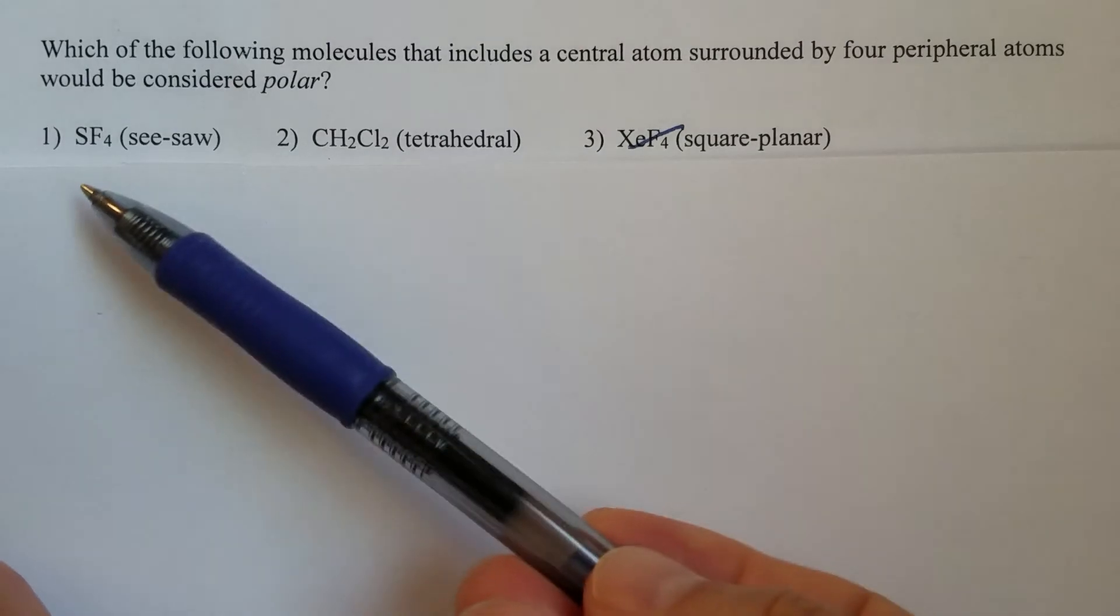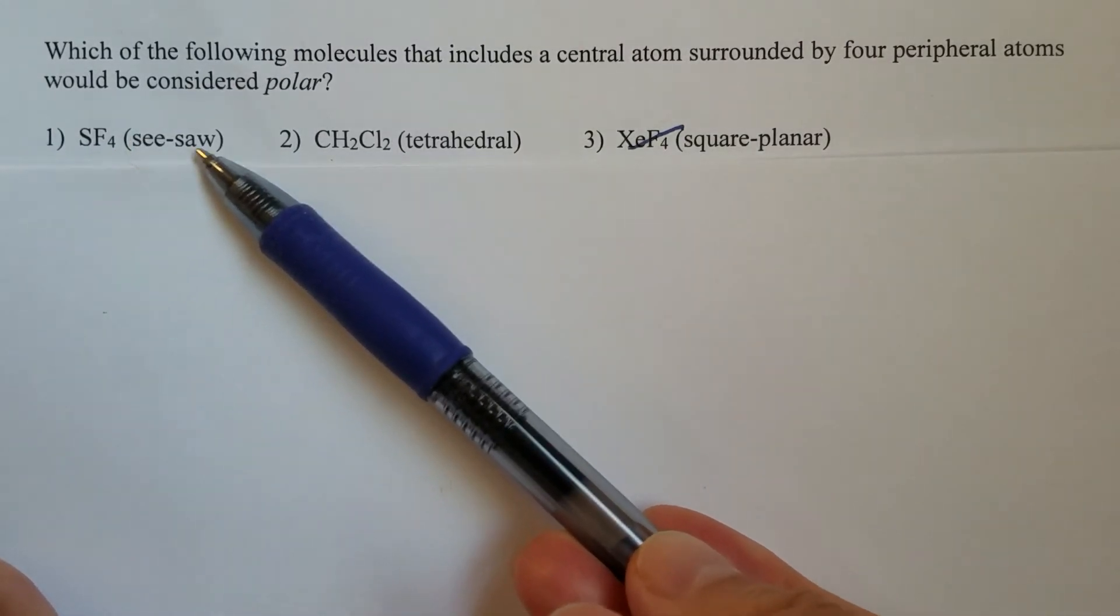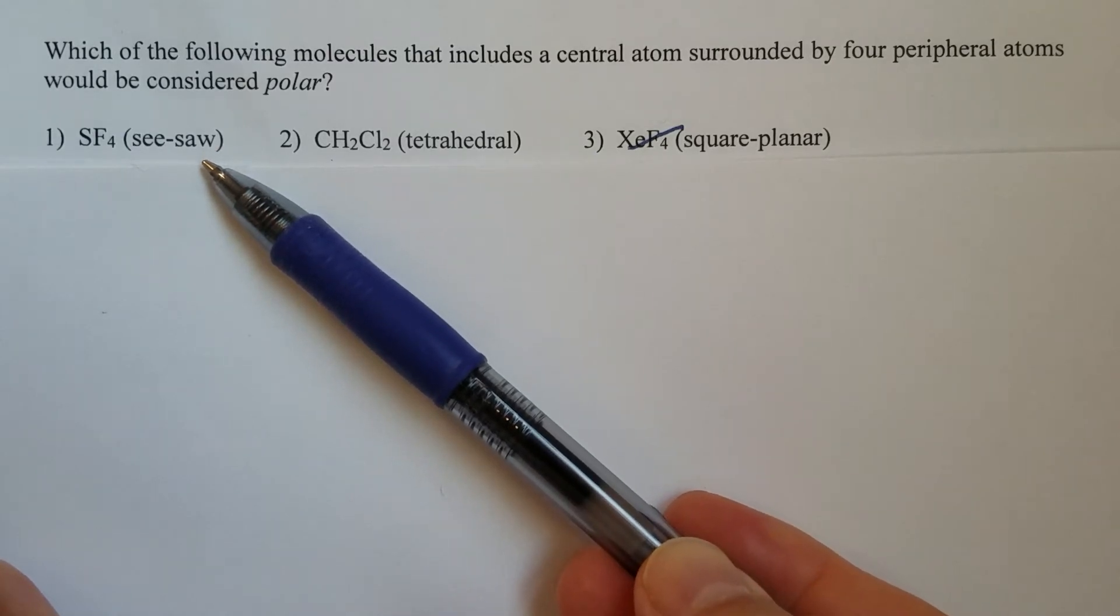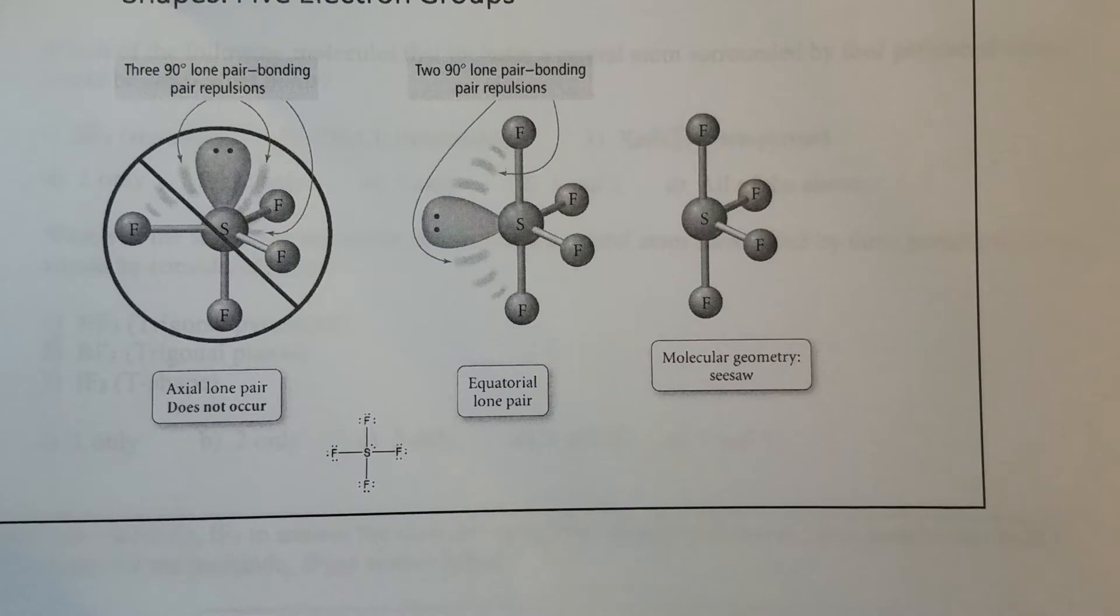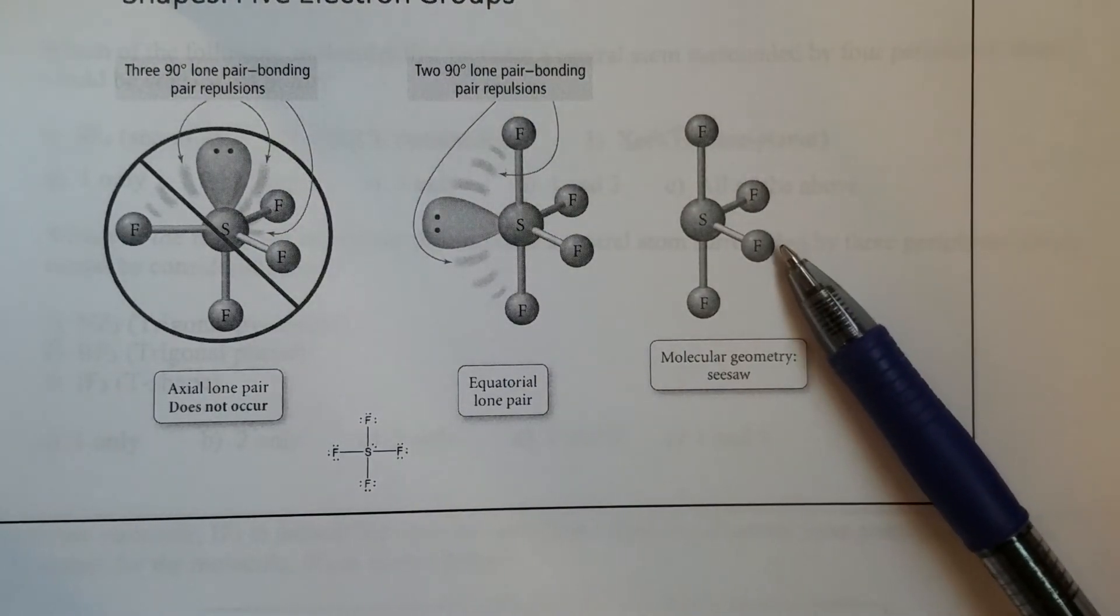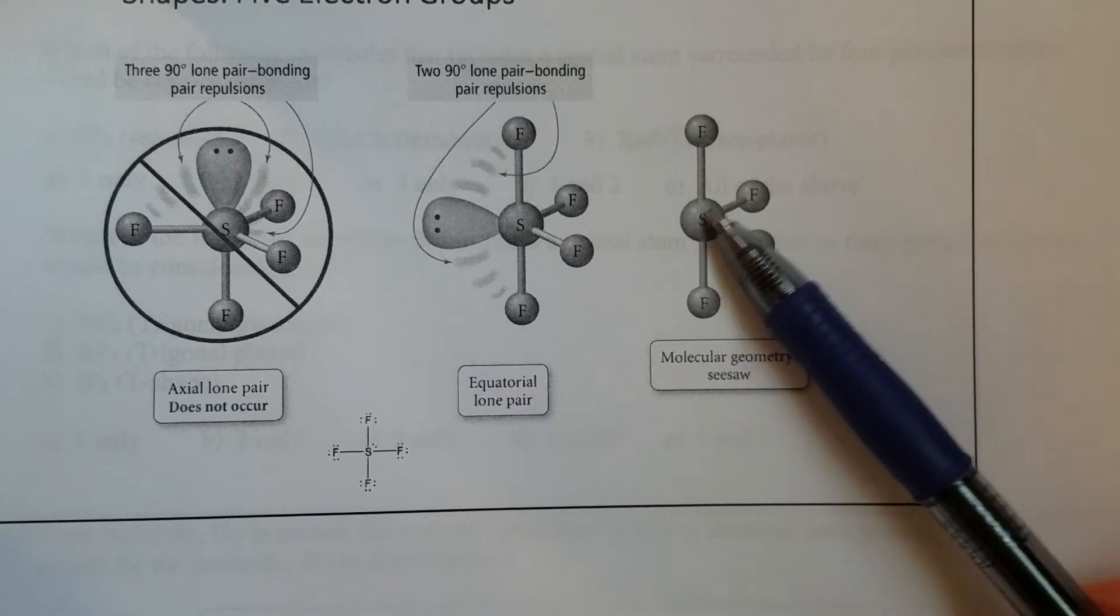Now let's look at the first molecule, sulfur tetrafluoride. The shape is a see-saw. See-saw is not symmetrical. This is the molecular geometry for sulfur tetrafluoride.